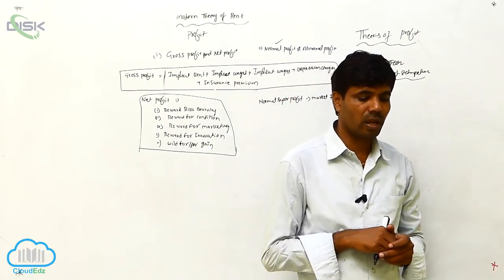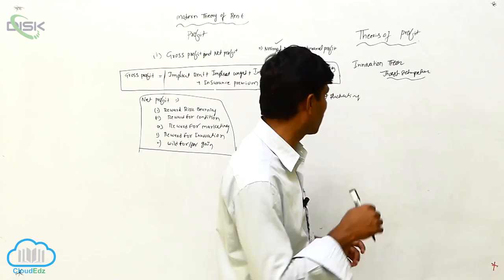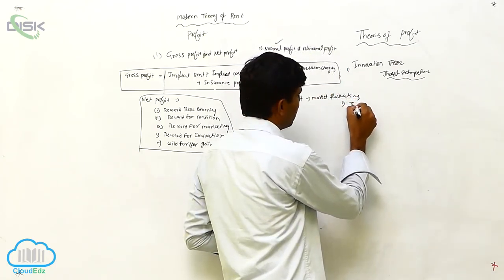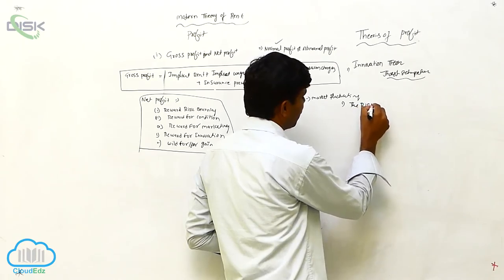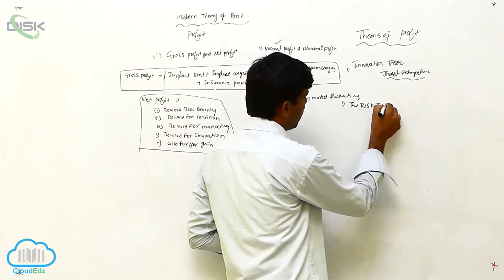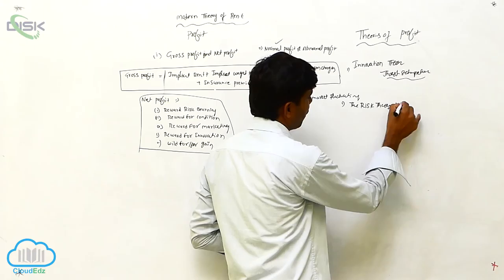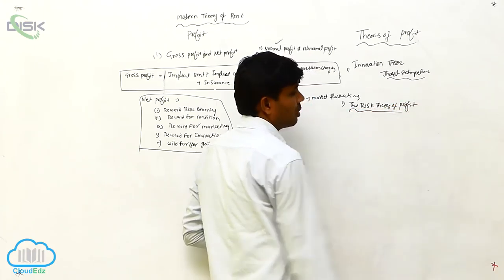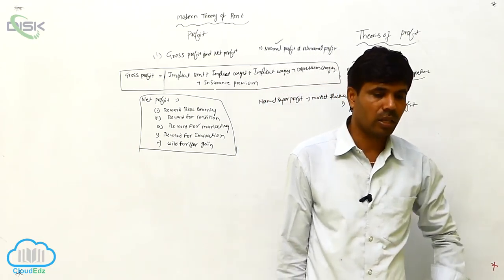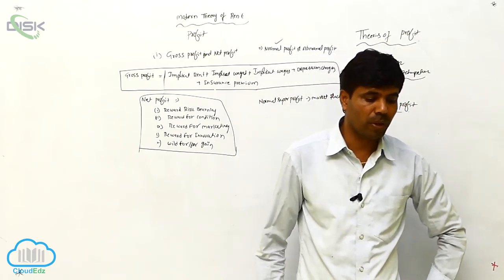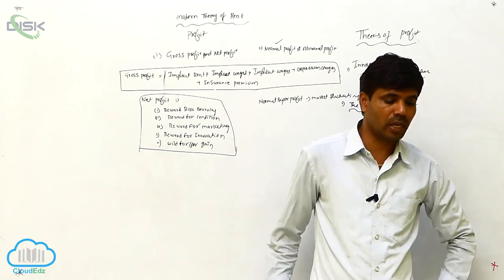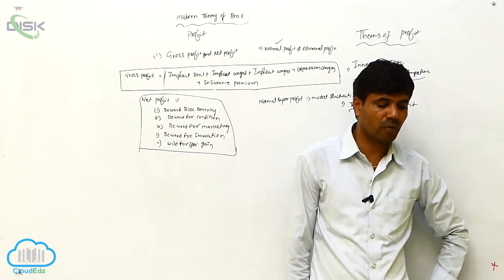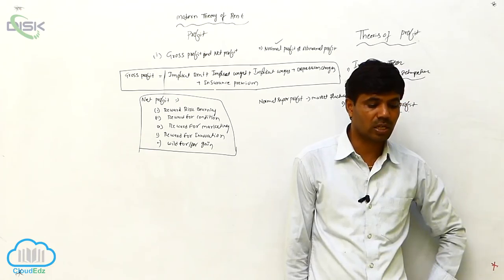Next is the risk theory of profit. Professor F.B. Hawley proposed a theory of profit which revolves around the entrepreneur's role in risk-taking. Profit is the reward for risk-taking — the factors of production play the main role in enterprises.